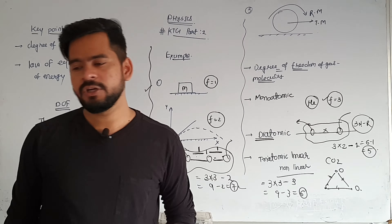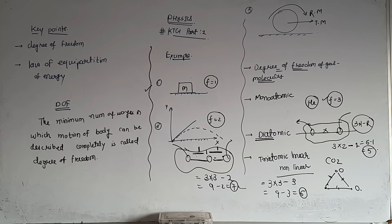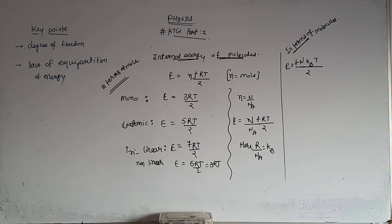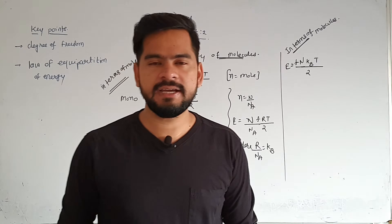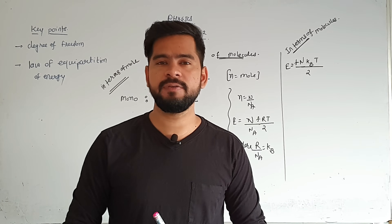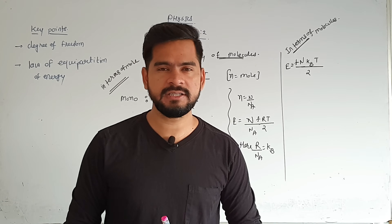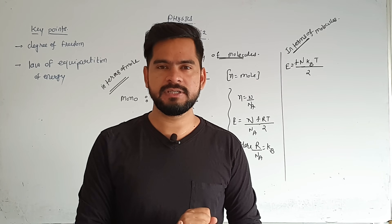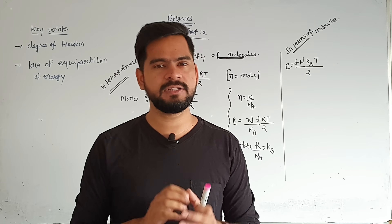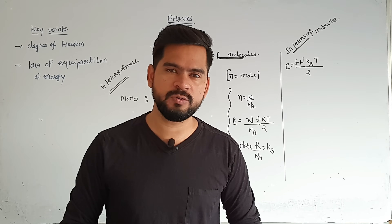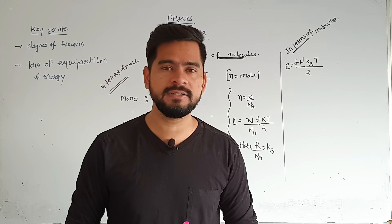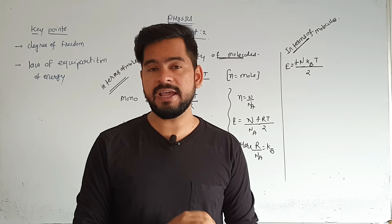Now we will understand the internal energy equation and how we can change the internal energy. This is connected to thermodynamics — you can go to the class 11 thermodynamics playlist. When I explained that Cₚ minus Cᵥ equals R, I also explained that the internal energy of the molecules is FRT divided by 2, where F is the degrees of freedom.